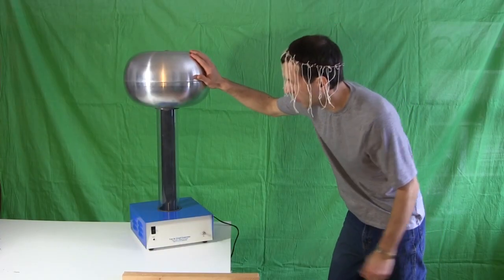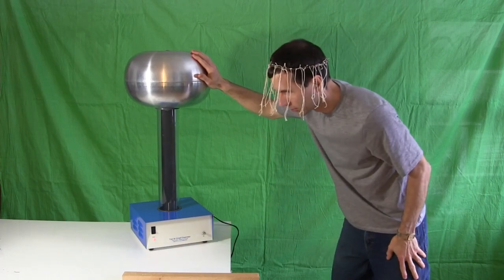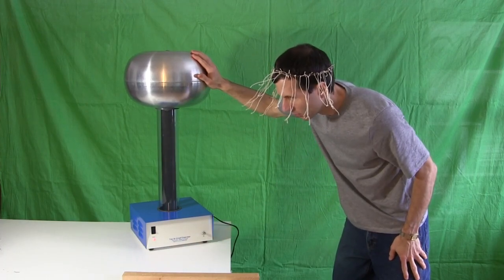Next put your hand on the dome. Then turn on the Van de Graaff generator. Your hair should now raise up. Give your head a shake to help separate the strands of hair.